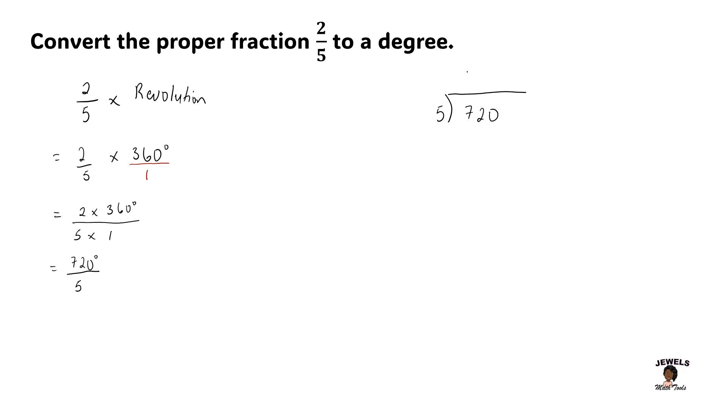5 is going to go into 7 once. 1 times 5 is 5. 7 minus 5 gives us a difference of 2.